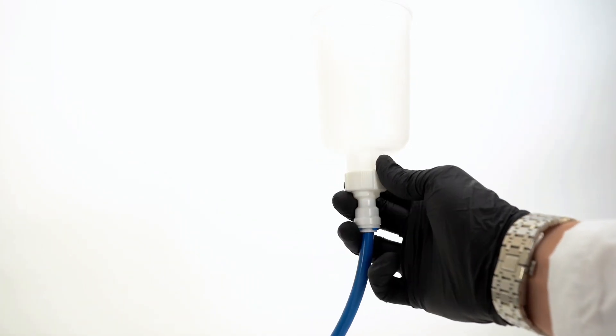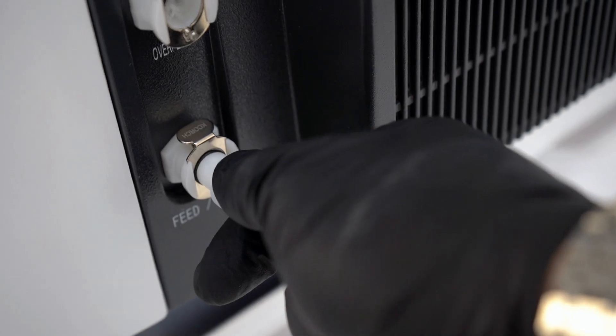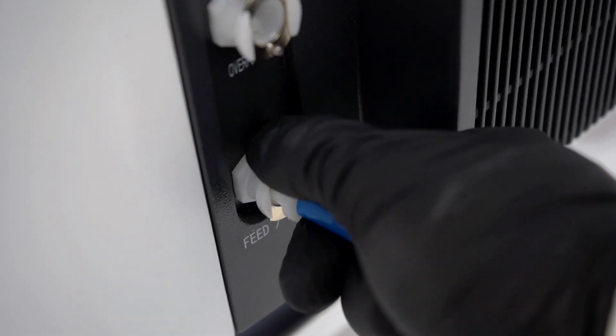To fill, use the provided funnel and plug into the back of the machine. To release the funnel, press down on the clamp and pull the cord out.